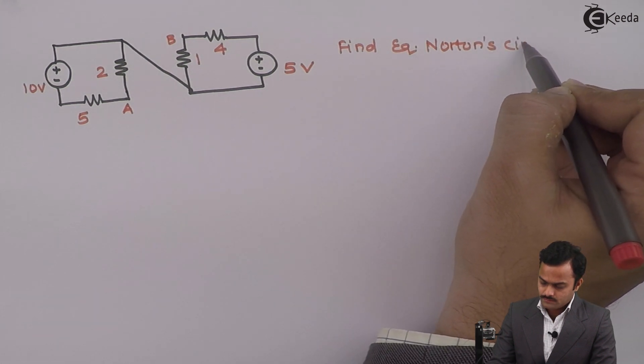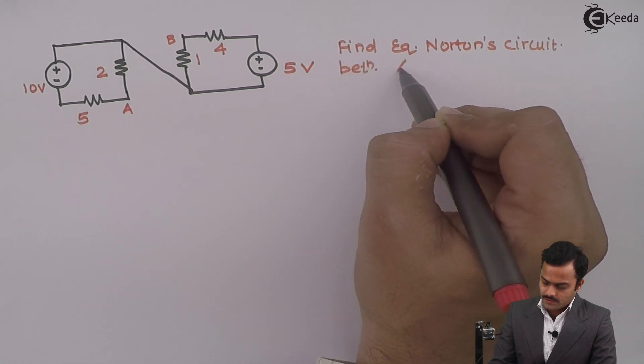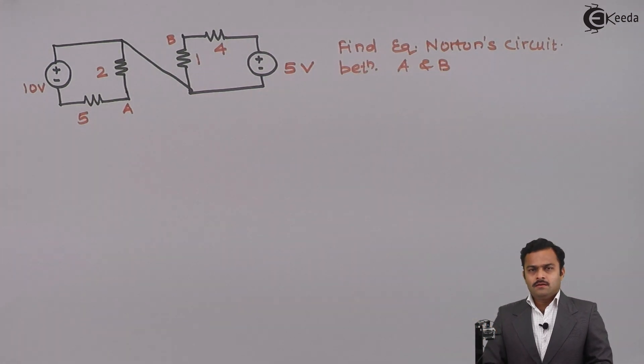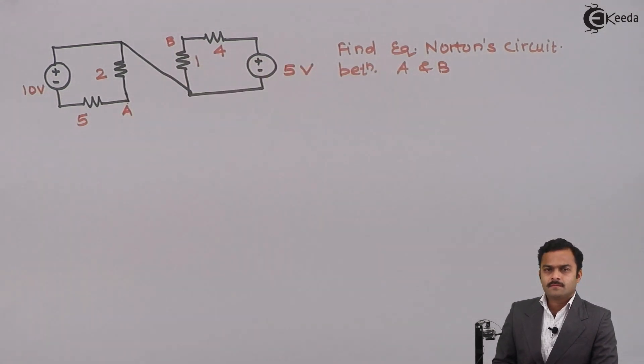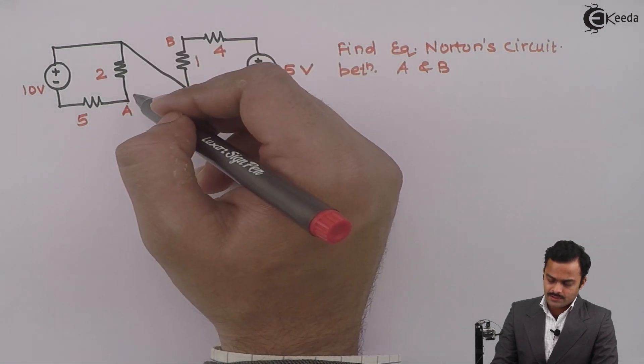If you see properly, to get IN I need to short circuit these two points and get a current. But it is very difficult here because it may give rise to a three-dimensional structure which is very difficult to analyze.